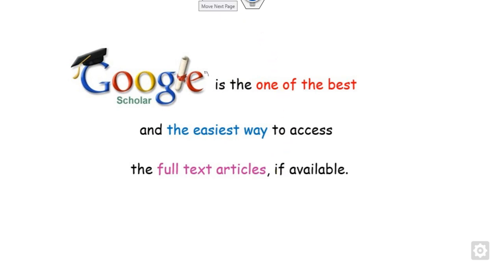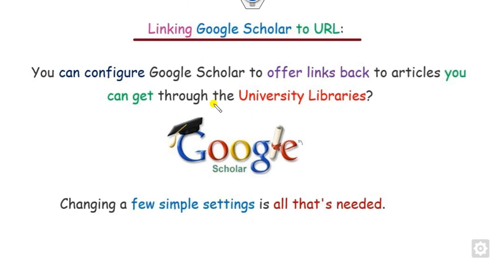Among these three methods, Google Scholar is one of the best and easiest ways to access full-text articles. To use it effectively, you first need to link your Google Scholar to different university libraries. If you are working in Asian countries, you access through Asian libraries; if in Europe, through European libraries. The major task is linking Google Scholar to different university library URLs, which I will now explain step by step.